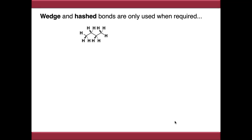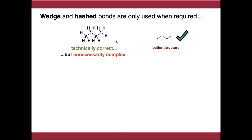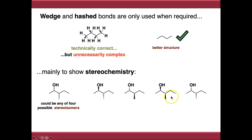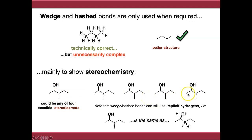We only use wedge and hash bonds when required. You could draw a beautiful three-dimensional representation of a molecule, but that's unnecessarily complex if not needed. Normal skeletal structures are absolutely fine unless we need wedge and hash bonds, usually to show stereochemistry. A molecule with two chiral centers could be any of four possible stereoisomers, so you need to draw out specifically which one you mean. Also note that you can still use implicit hydrogens with wedge and hash bonds — if your group is on a wedge bond, the implicit hydrogen is on a hash bond, and vice versa.